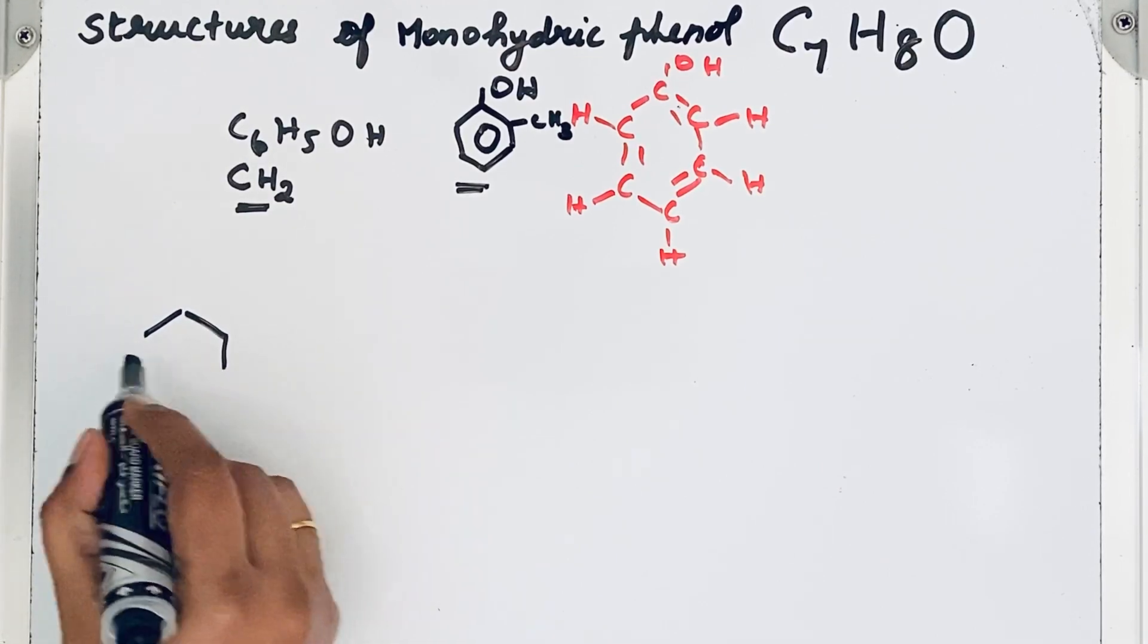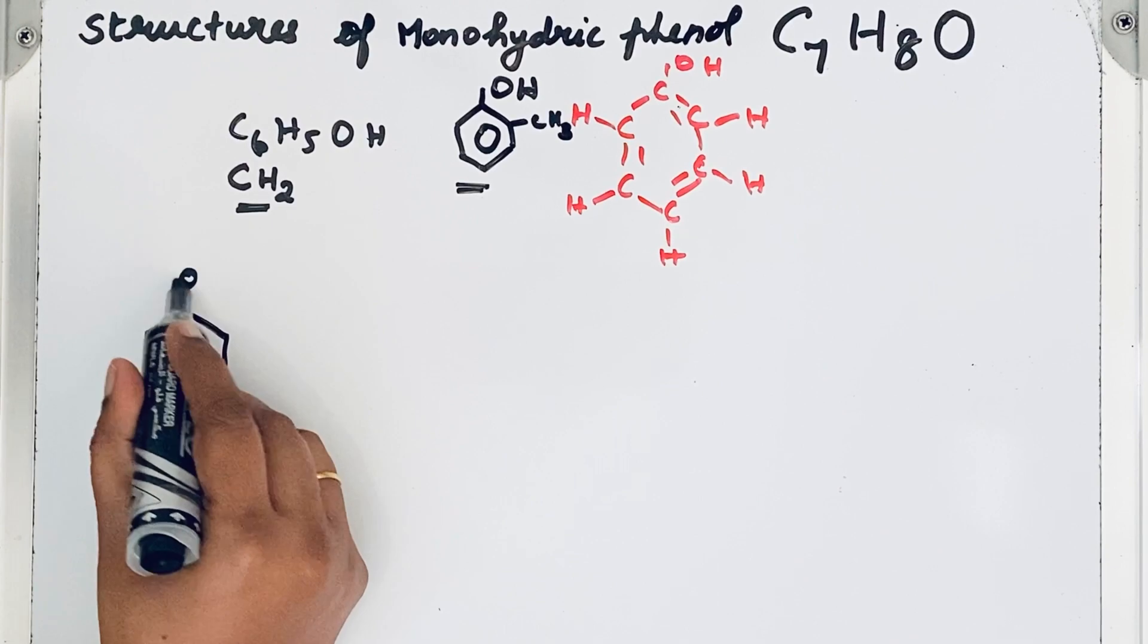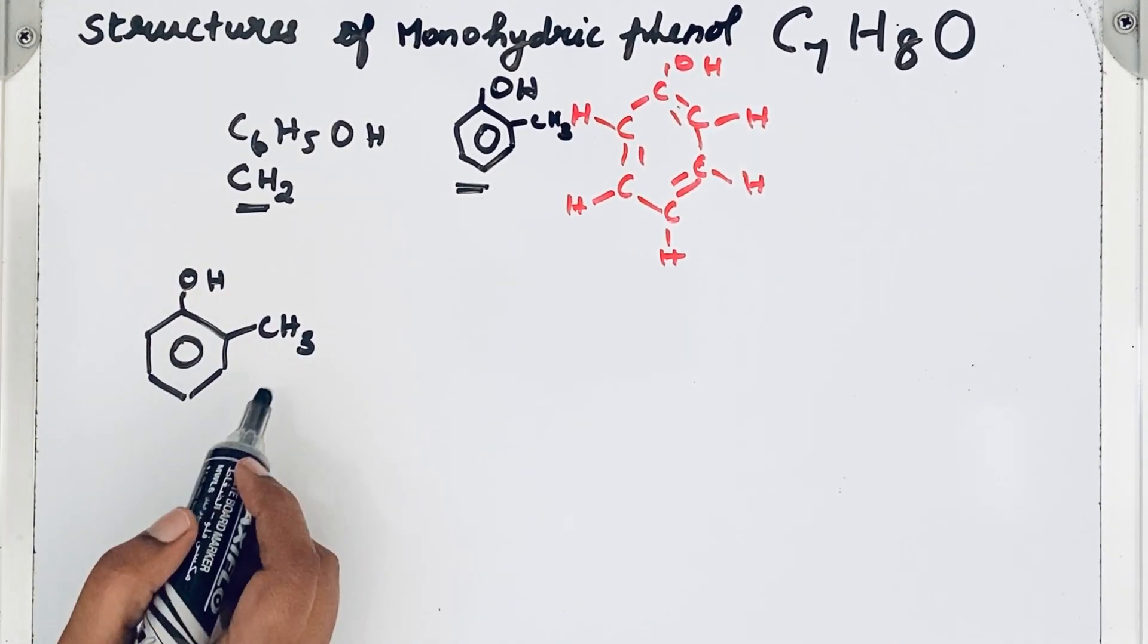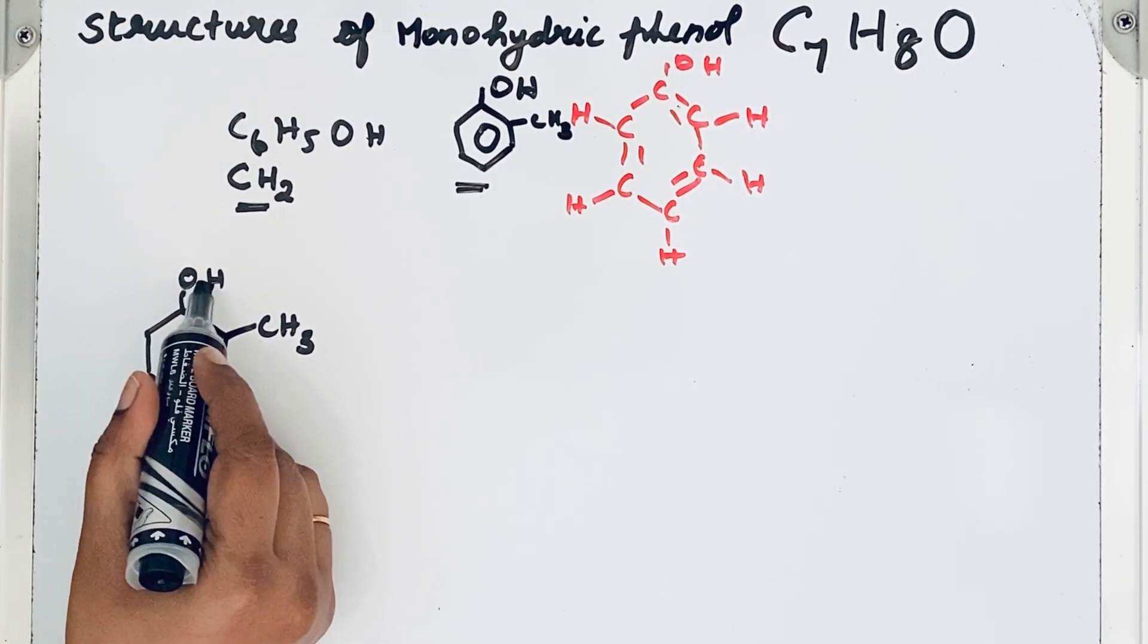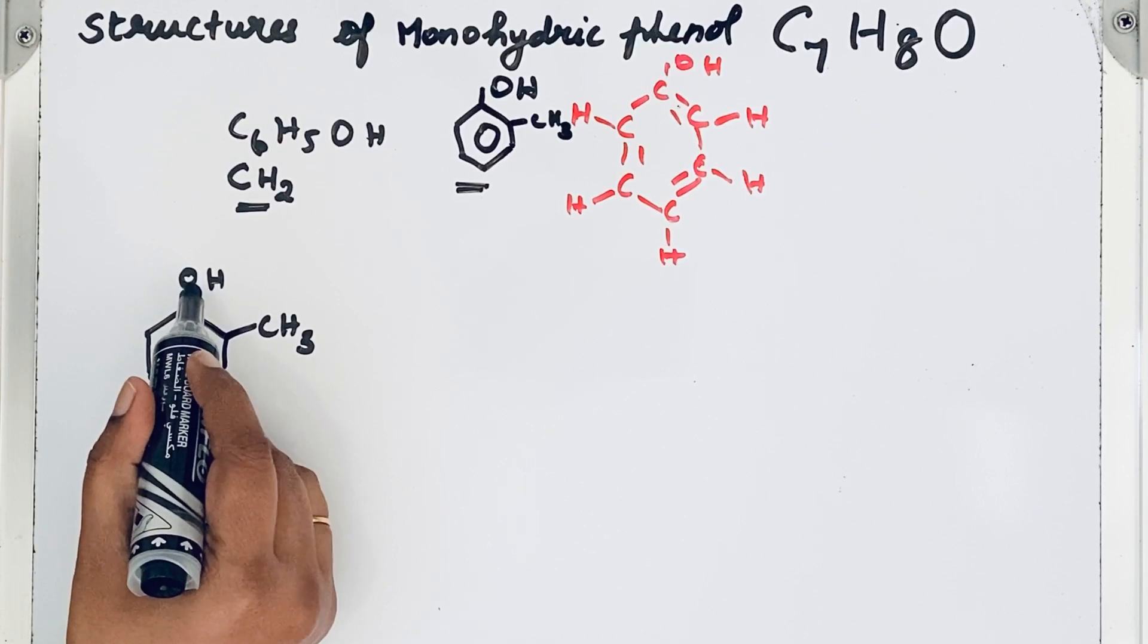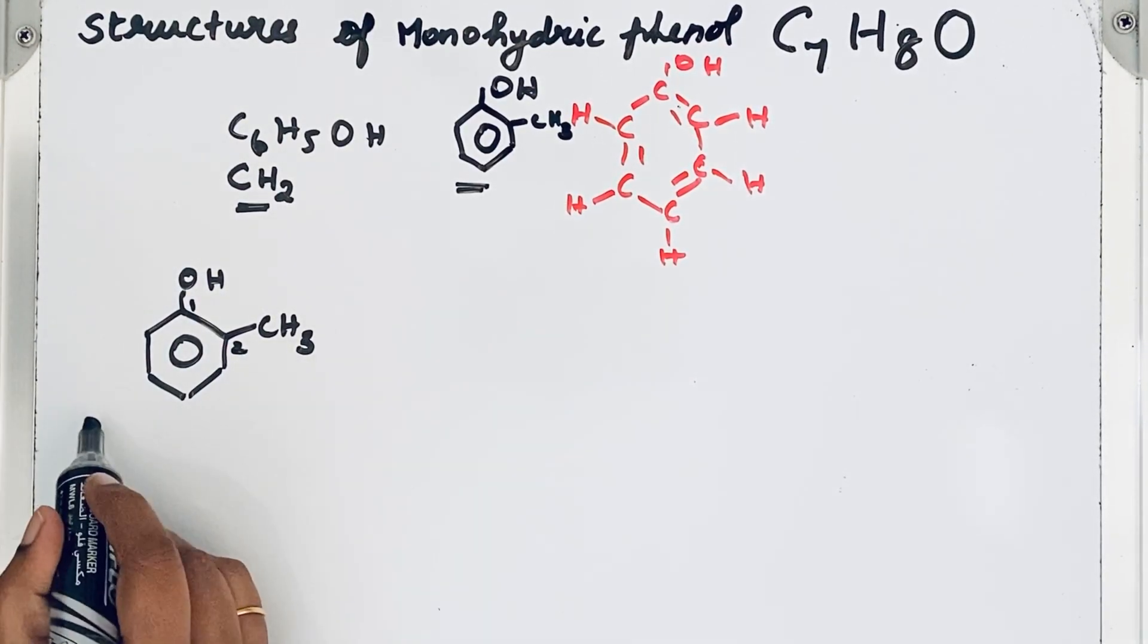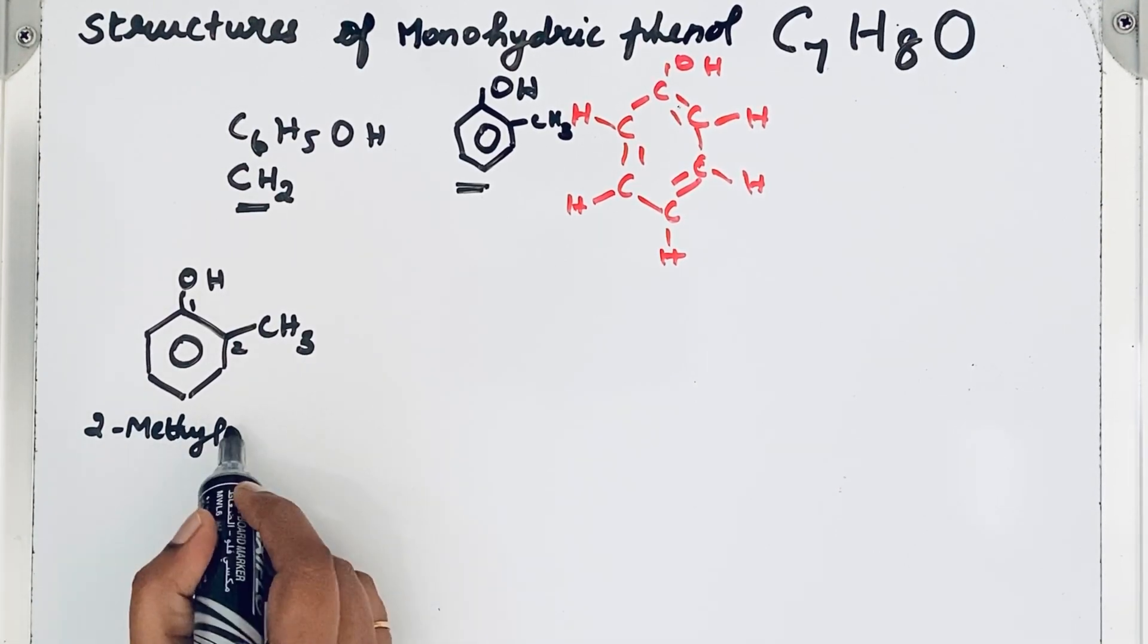This is one of the possible structures. Let me draw it here for clear understanding. OH group, then here CH3 group. How to give that IUPAC name? Numbering starts from here because this is the functional group. Functional group should get the lowest number. So one, two, 2-methylphenol.